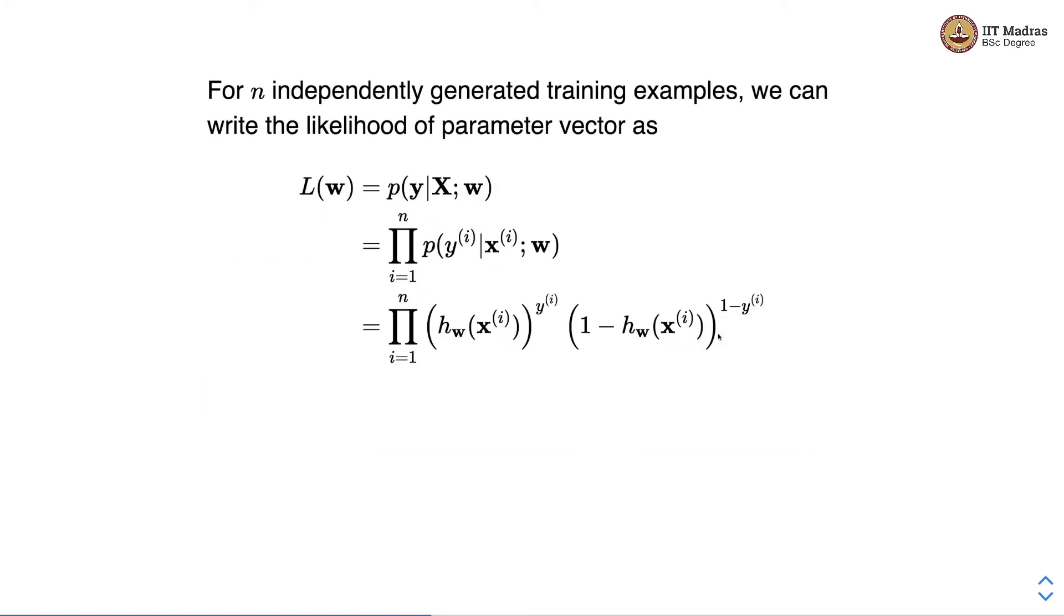For n independently generated training examples we can write the likelihood of parameter vector as L of w, which is equal to probability of the entire label vector given the feature matrix parameterized by w. This probability can be written as product of n independent probabilities for each example. So yi is the label for ith example given the feature vector for the ith example and we multiply n such probabilities to get this joint probability.